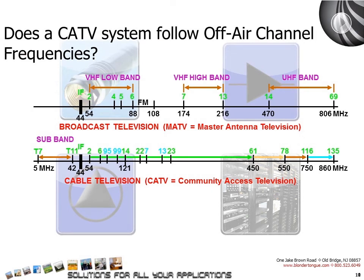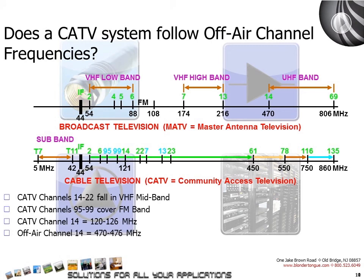Does a CATV system follow off-air channel frequencies? When CATV systems were developed, they started out by following the same frequency assignments as the off-air channels. But being a closed system, the CATV companies took advantage of the unused lower frequencies. The order of channels by frequency is 2–6, 95–99 which falls on the FM band, 14–22 is the VHF mid band, 7–13, 23–94, and 100–135. Cable channels 2–13 are the same frequency as their off-air counterparts. Cable channel 14 resides at 120–126 MHz while off-air channel 14 is 470–476 MHz, a much higher frequency.